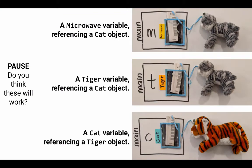I have three situations. The top one: a microwave variable is referencing a cat object. The middle one: a tiger variable is referencing a cat object. And then a cat variable is referencing a tiger object. I want you to pause here to think through which of these do you think should work? It's important to remember that programming languages are designed by humans, so your intuition about how the language should work is actually really relevant.